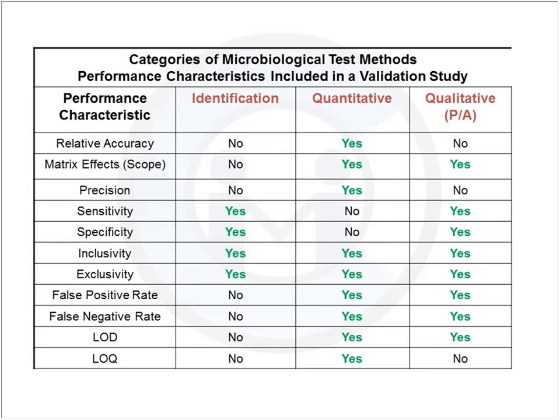Exclusivity is also listed for identification methods — for example, if you have a method that identifies gram-negative organisms, you want to make sure it excludes gram-positive organisms and vice versa. For quantitative methods where you're doing enumeration, you look at relative accuracy, matrix effects, precision in terms of repeatability and reproducibility, inclusivity, exclusivity, and false positive and false negative rates.